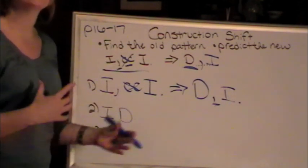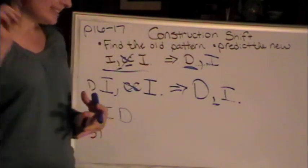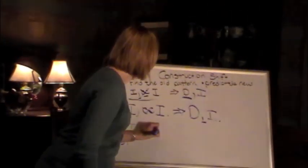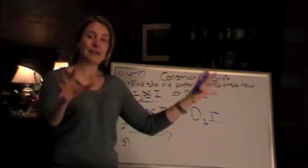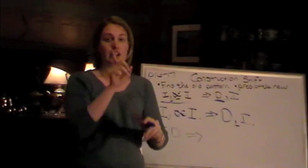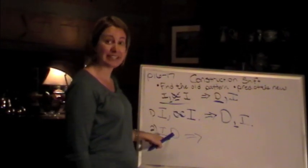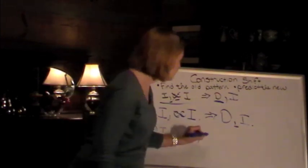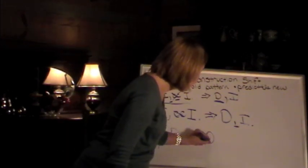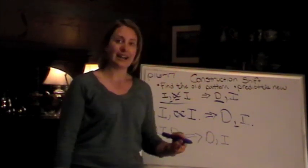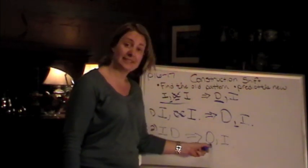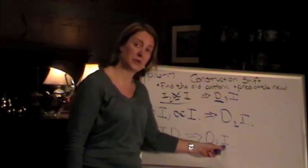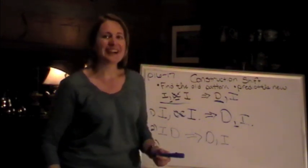Now it tells you to rewrite the sentence beginning with since it was. So we're going to be changing it and basically just switching the order. Just remember, even though this pattern did not have a comma, the new pattern will because the new pattern is D comma I. Since it was our anniversary, comma, we ordered lobster.